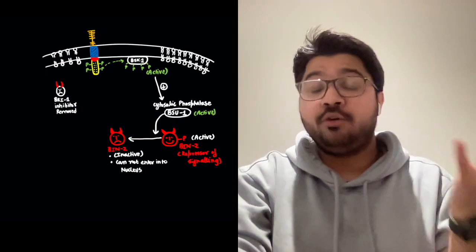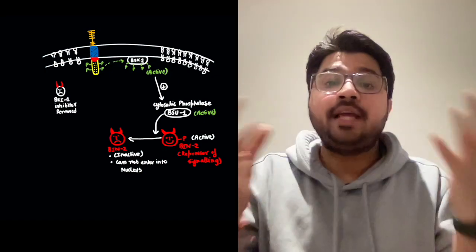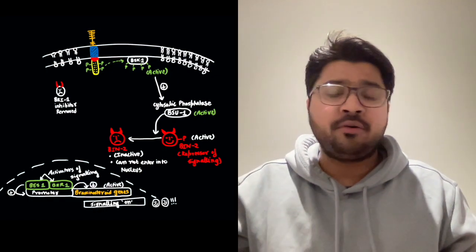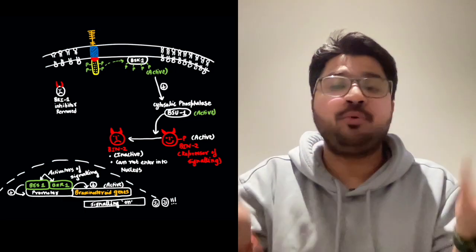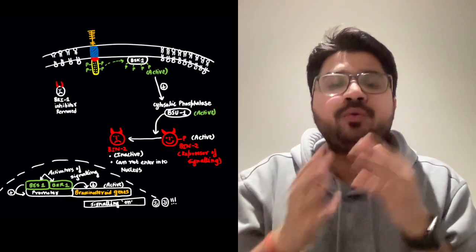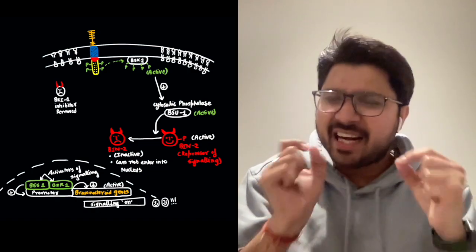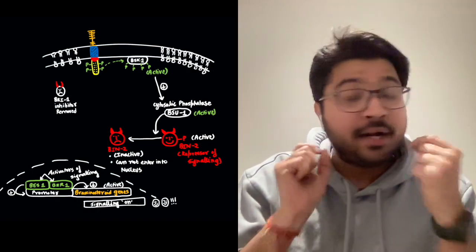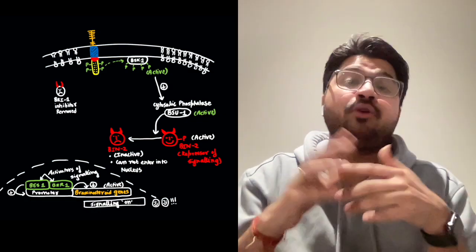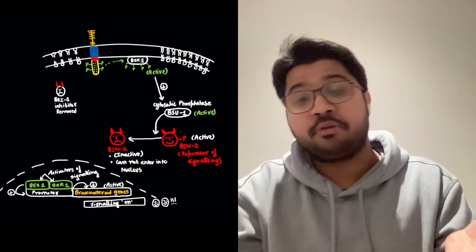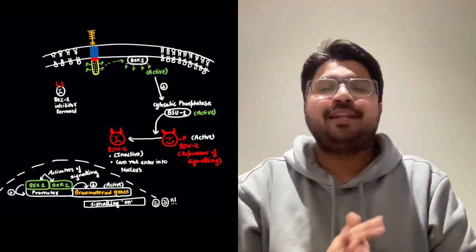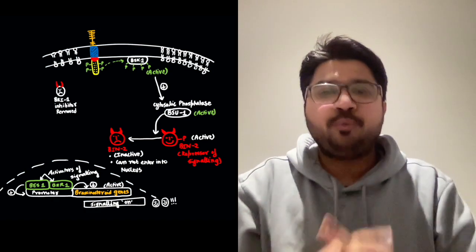Now both villains are inactive: BKI1 was removed and BIN2 lost its phosphate. The activators BES1 and BZR1 are now free and active inside the nucleus since BIN2 cannot enter. These activators activate the promoter, the promoter activates the brassinosteroid genes, and the signaling pathway is switched on — the happy ending.